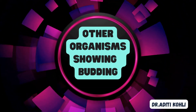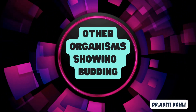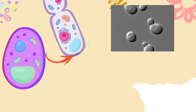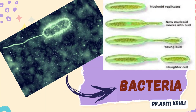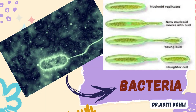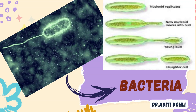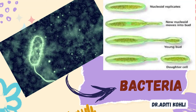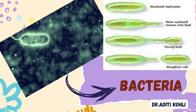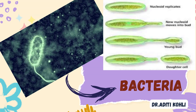There are other organisms that also show budding apart from Hydra. For example, in bacteria, a new nucleoid develops which moves into the bud. It then develops into a young bud, and later separates from the parent cell and is called the daughter cell.